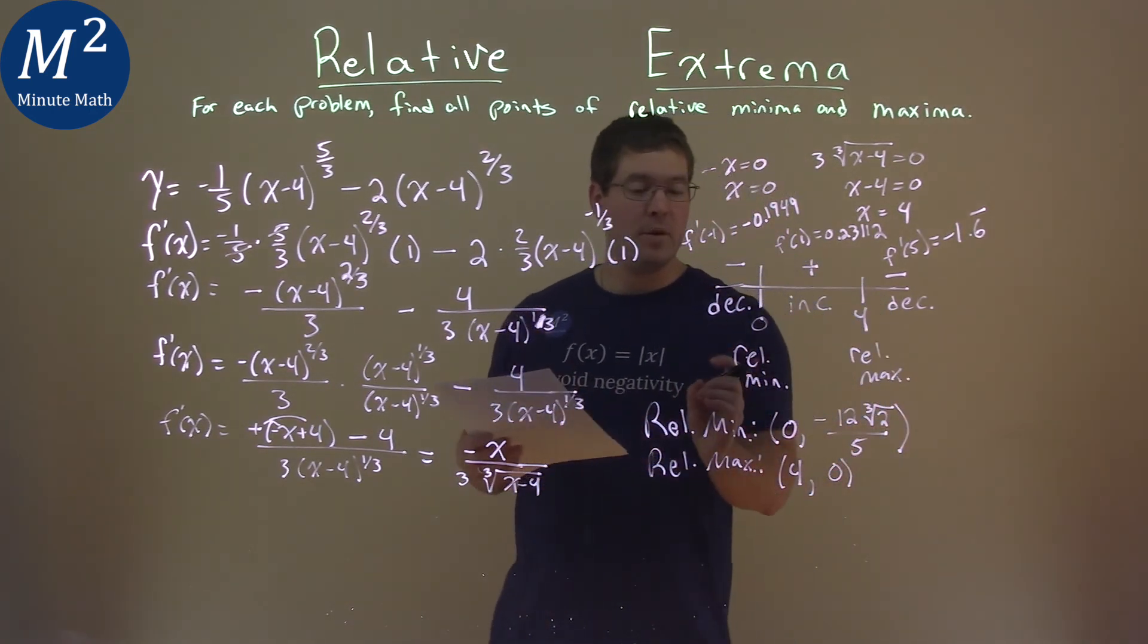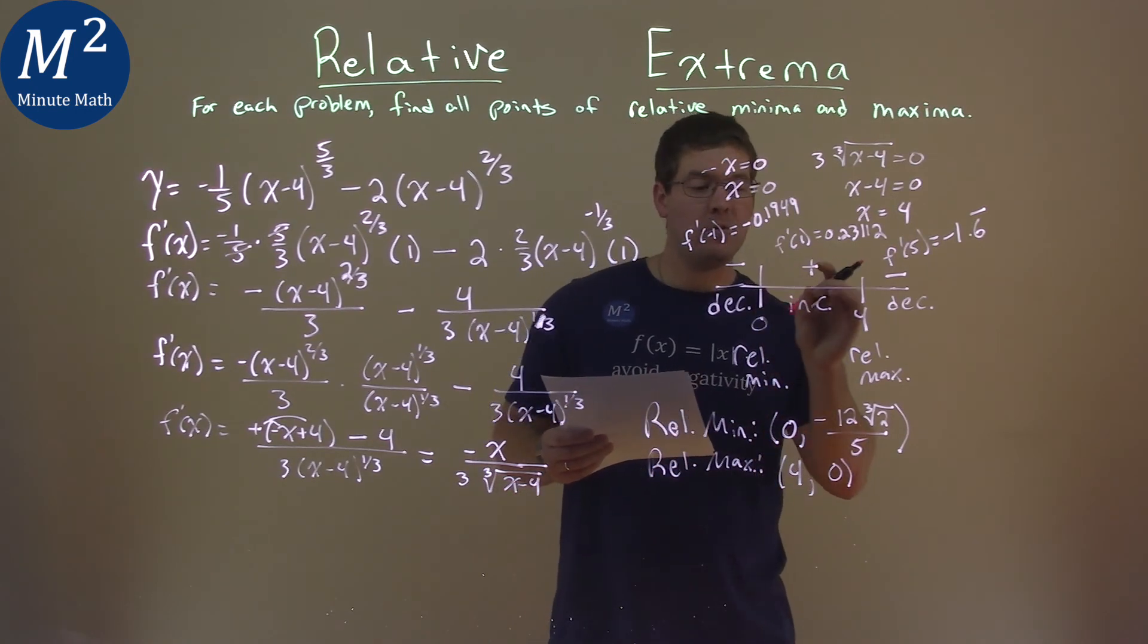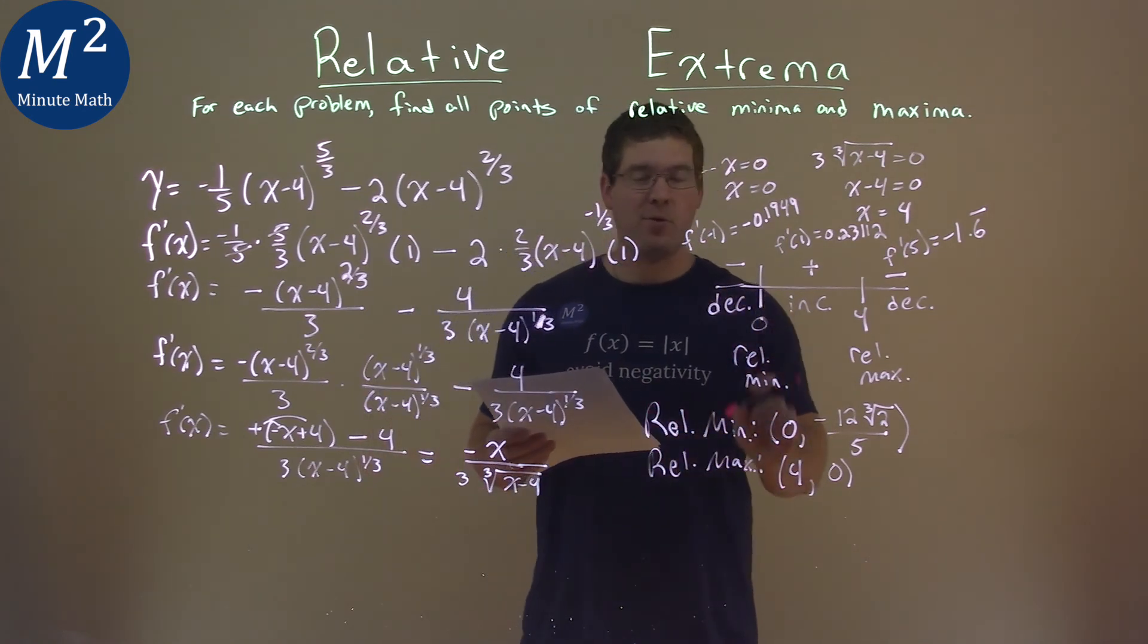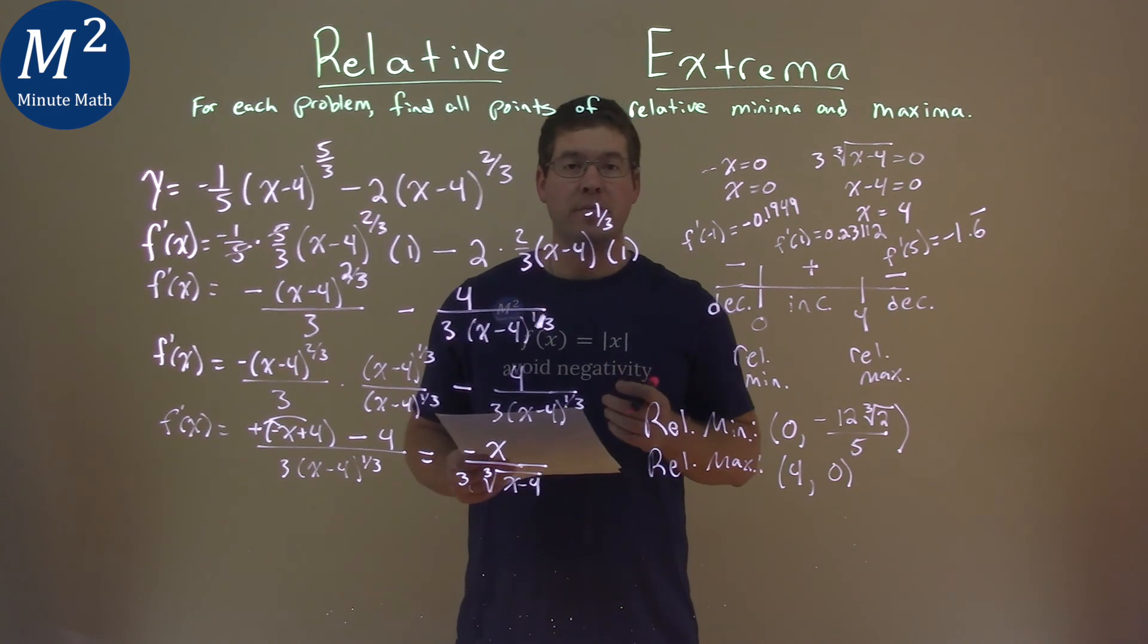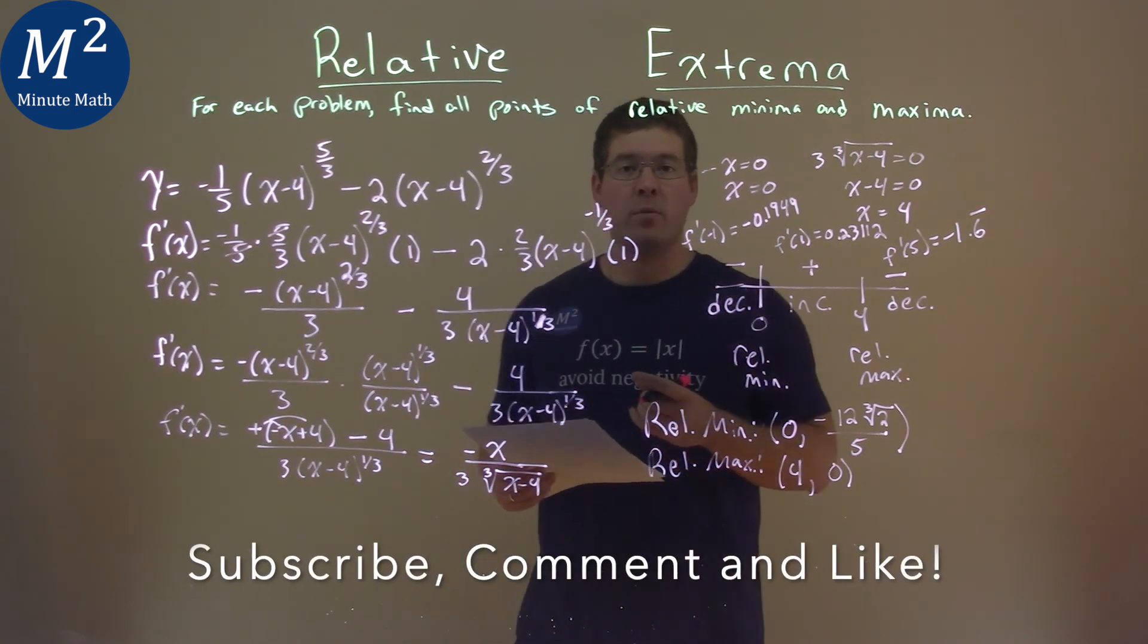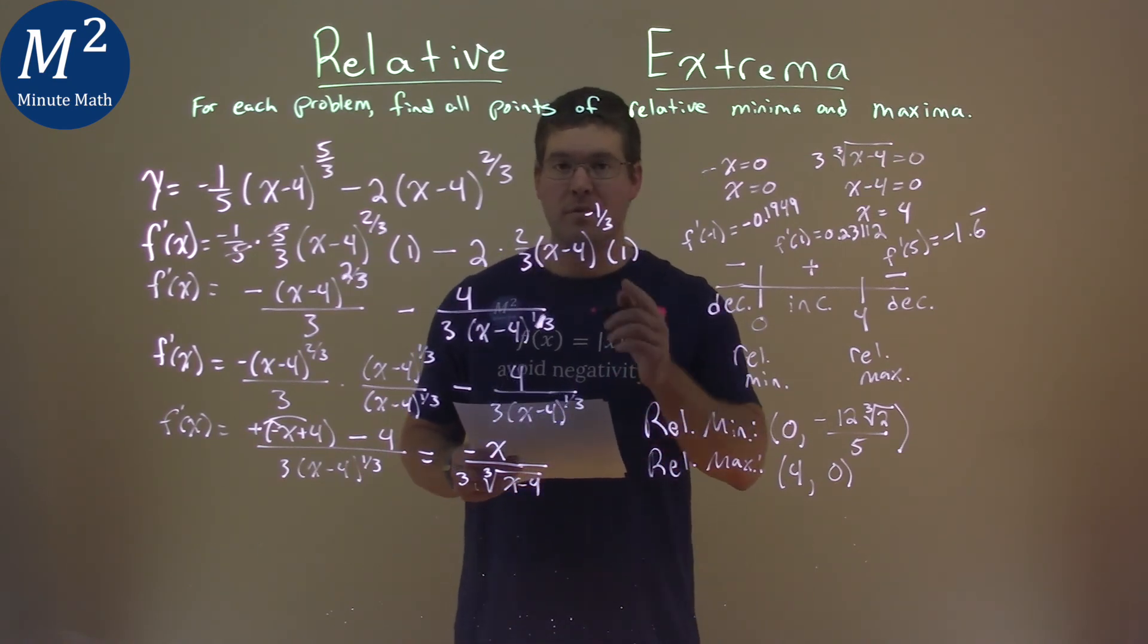So, our final answer here is that relative minimum happens at the coordinate point zero comma negative 12 cubed root of 2 over 5. And the relative maxima happens at 4 comma 0. I hope this video was helpful for you. And if it was, please subscribe to this YouTube channel and like this video. This helps us make more free math lessons for you and for everyone else. So, as always, thanks for watching.